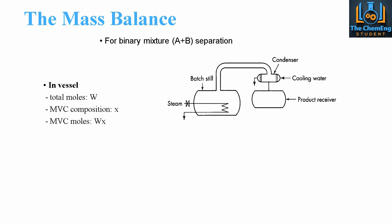Within the vessel, the total moles is denoted by capital W. When we talk about distillation mass balances, we always refer to the more volatile component, because that is the thing that is going to change its state first. We can manipulate the operating conditions to only remove the more volatile component at the top of the column. The more volatile component composition is denoted by small x, so the more volatile component moles is W multiplied by x, giving us WX.